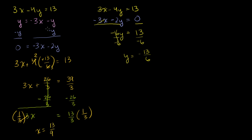So this system had a well-defined solution: x is equal to 13 over 9, and y is equal to negative 13 over 6. It has only one solution — these two lines intersect at exactly one point. A system like this, where it has exactly one solution, is called a consistent system of equations, and everything we've been doing so far has been consistent systems.